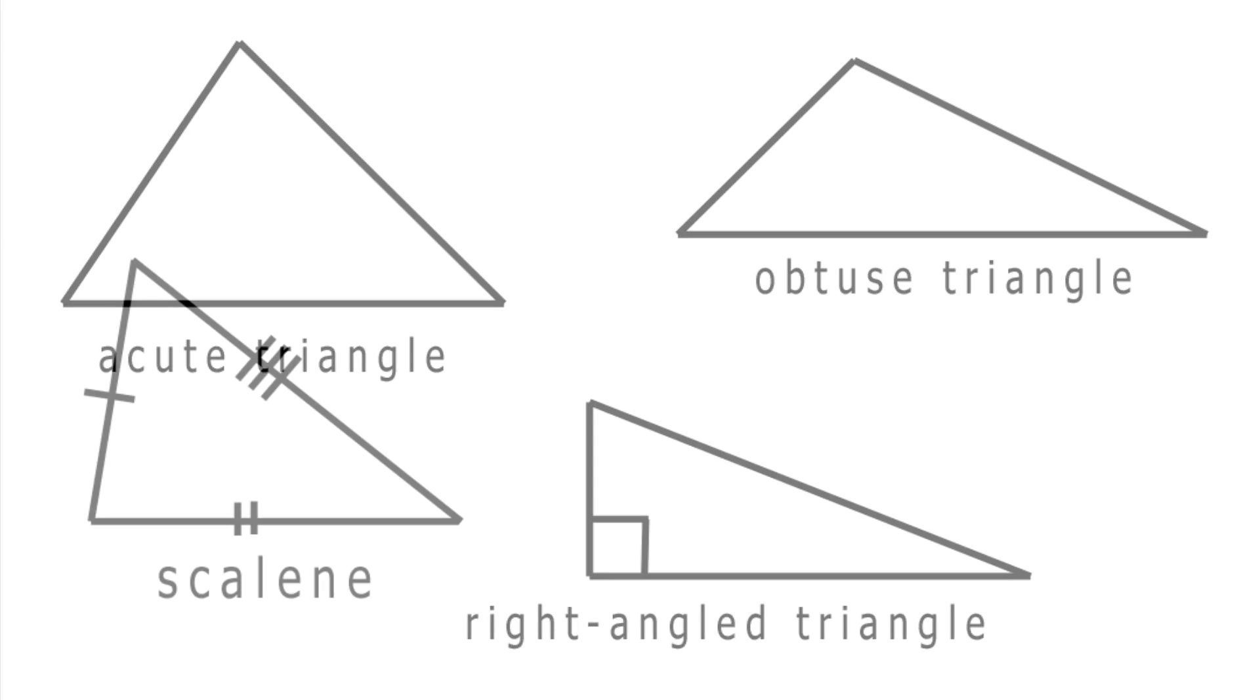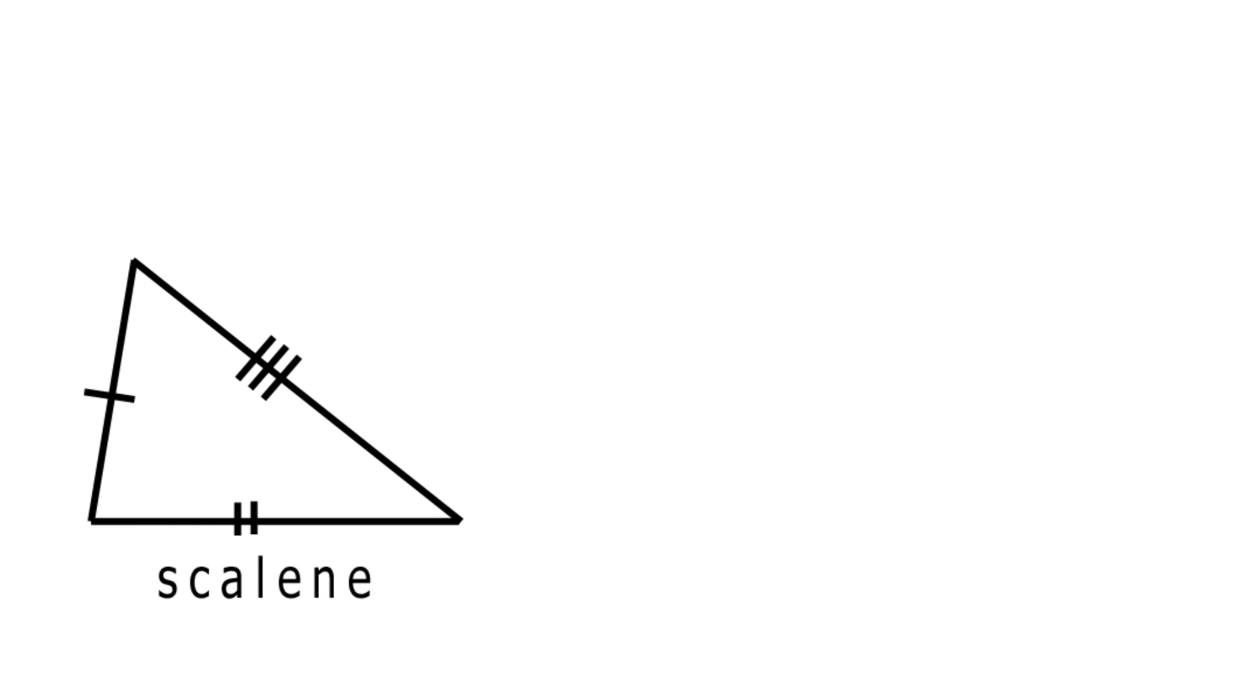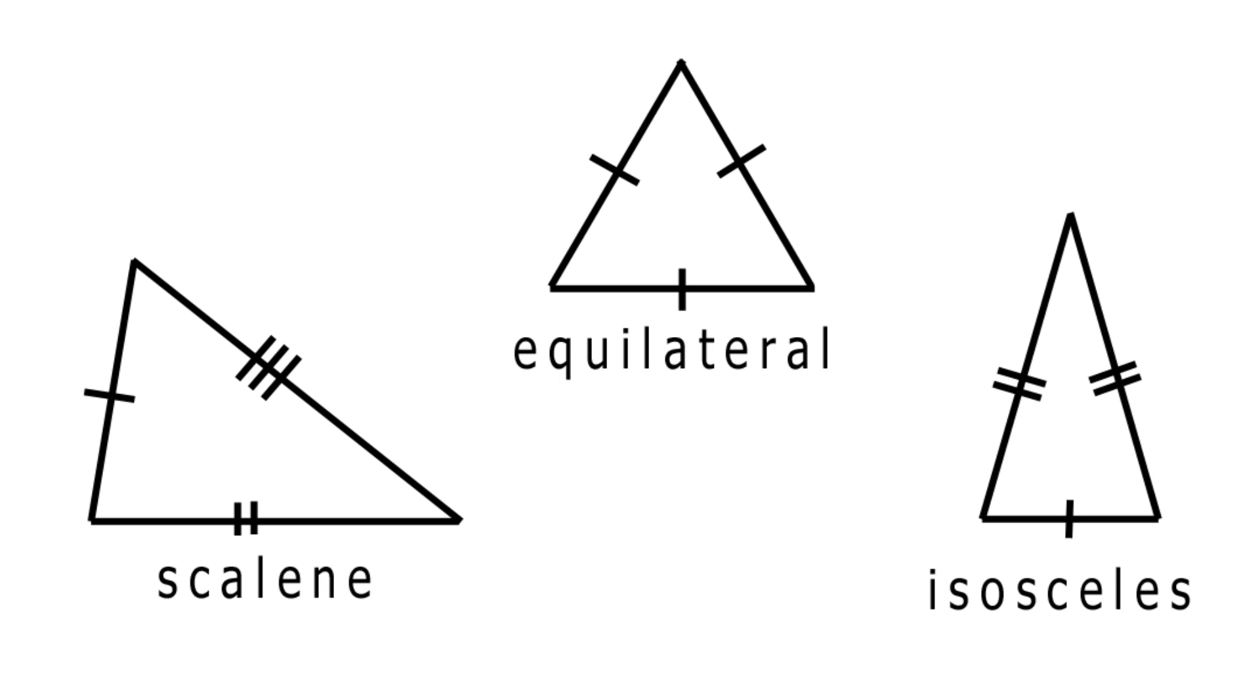A scalene is a triangle with each of its sides of a different length. An equilateral triangle is one with all its sides the same length. An isosceles triangle is one with two sides the same.